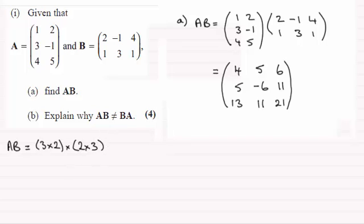And always you can multiply if these two numbers are exactly the same, and the result is a matrix with dimensions 3 by 3, the two outer numbers. So what we end up with is a 3 by 3 matrix, and you can see that anyway in the answer to part A.